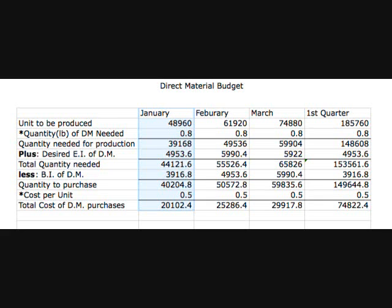Once this has been calculated, multiply it by the cost per unit and that gives you the total cost of direct materials purchases. $40,204 times $0.50 equals $20,102.